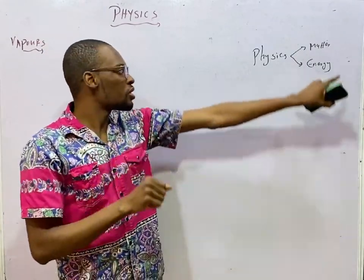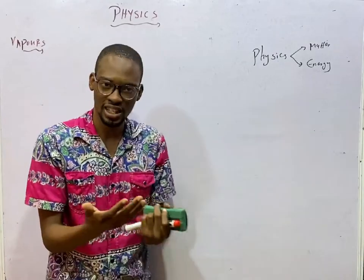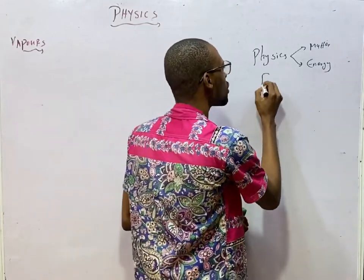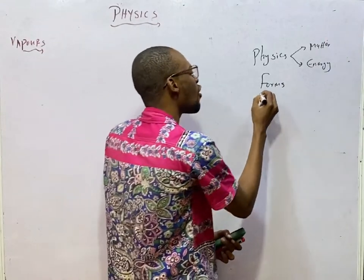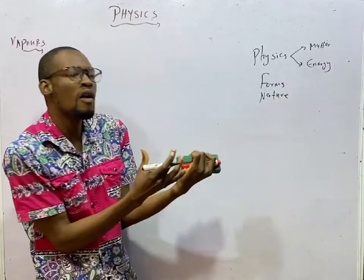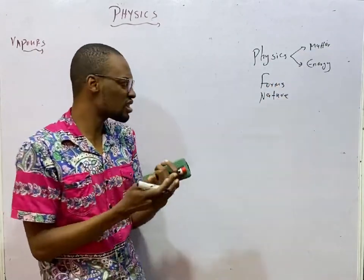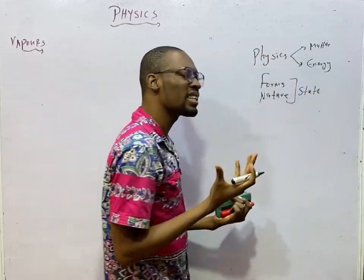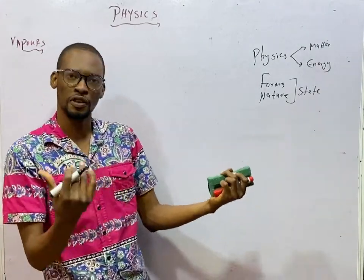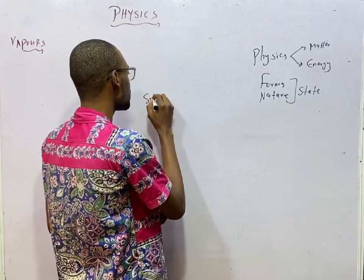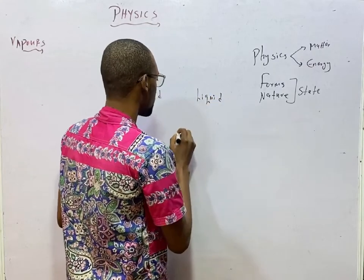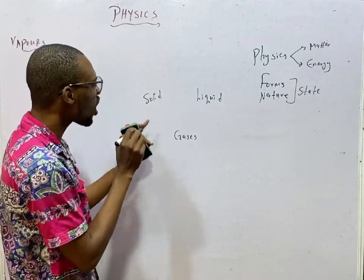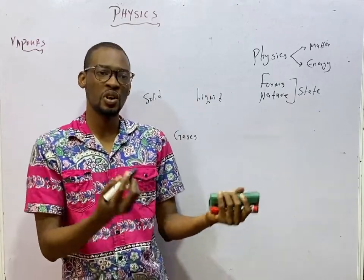Moving forward. Physics. This matter, which is anything that has mass and occupies space, can exist in various forms, in various nature. This nature or forms that matter can exist refers to the state of matter. Now basically, at this level, at any given time, matter can exist as solid, as liquid, and as gas.